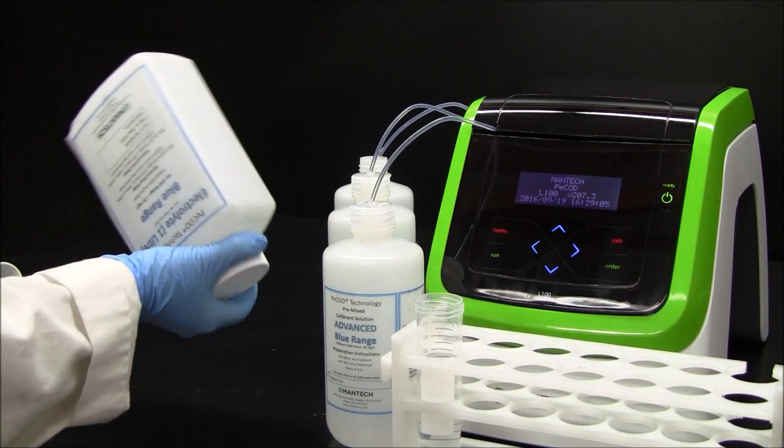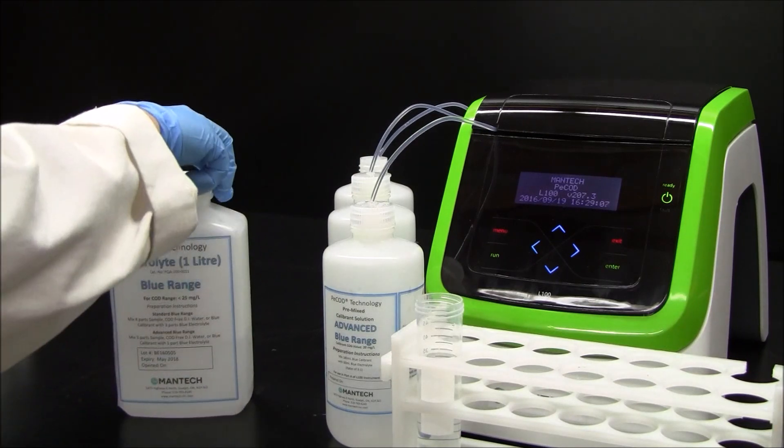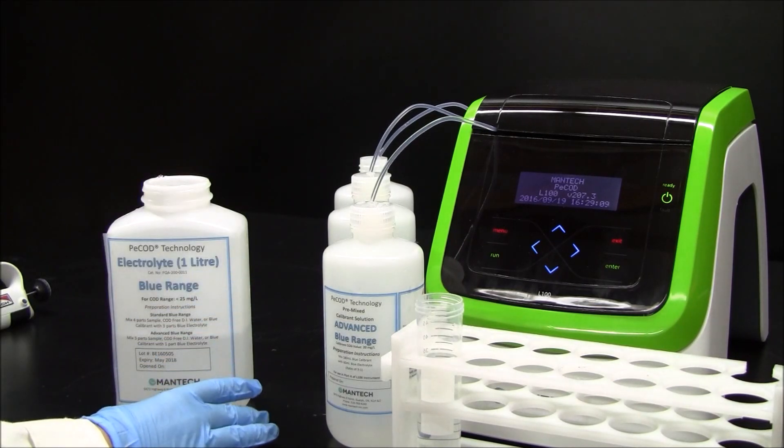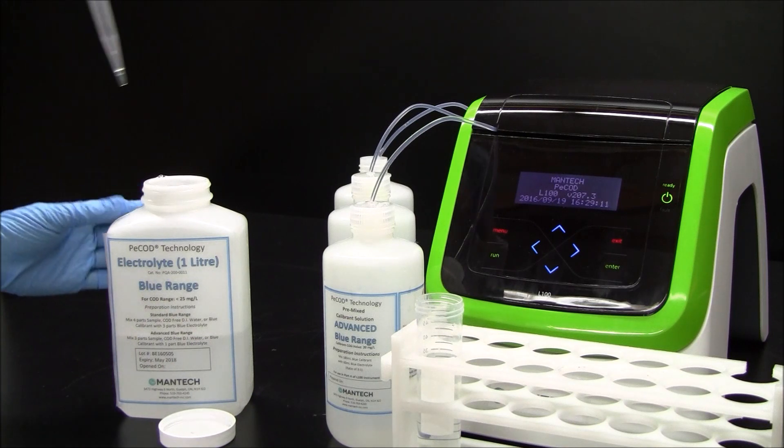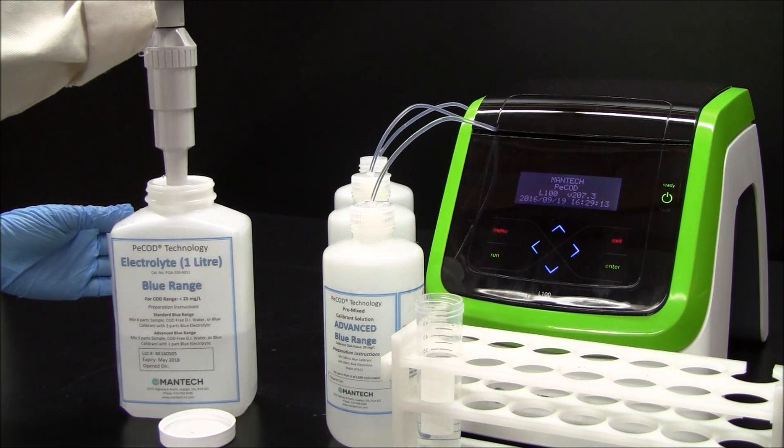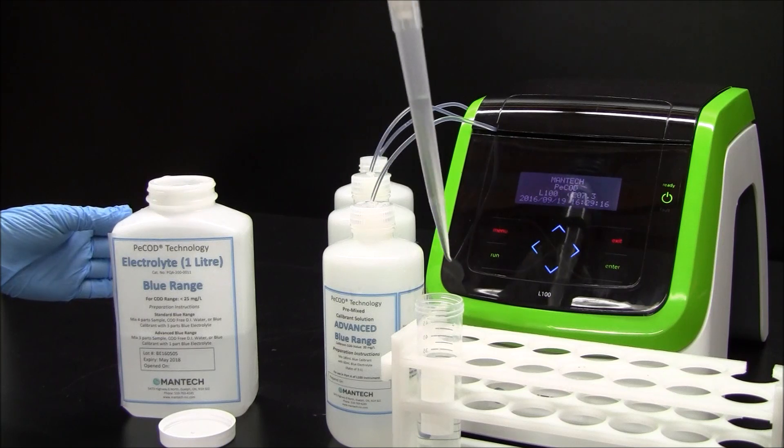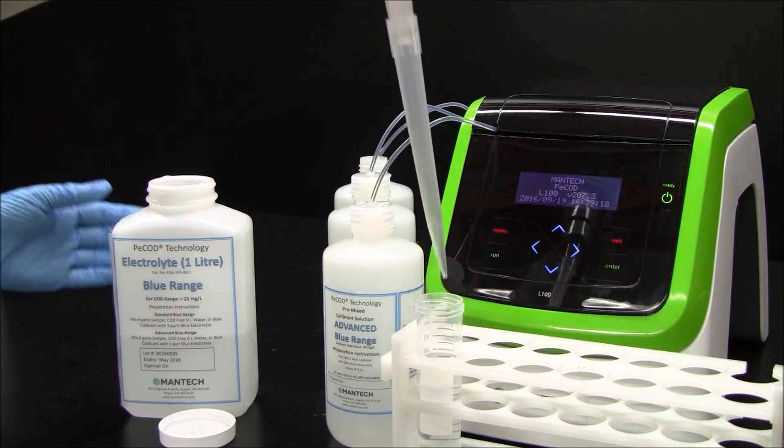Mix the electrolyte solution as specified in the quick start guide. Use an auto-pipet to measure the electrolyte and sample in the prescribed ratio. Remember to use a new pipet tip for each sample.